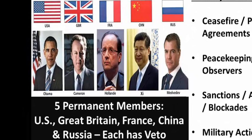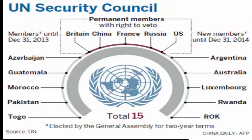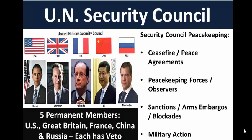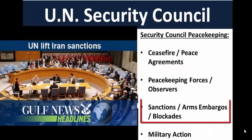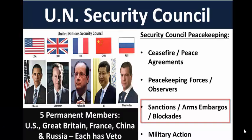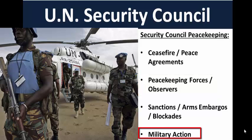There are five permanent members of the UN Security Council — the big guys: the United States, Britain, Russia, China, and France. In addition to the five members, 10 additional countries join the permanent members for two-year terms, making a total of 15 countries on the Security Council. The Security Council will try to broker ceasefires between two sides, pass sanctions — blocking trade with another country as a punishment — send troops or observers, and if worse comes to worst, use military force.